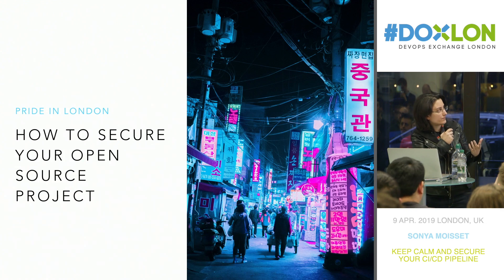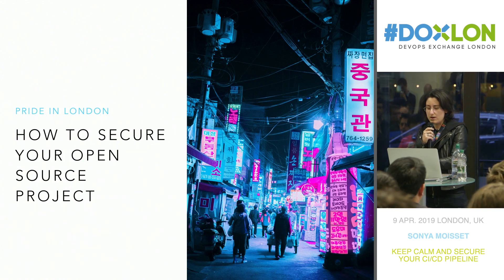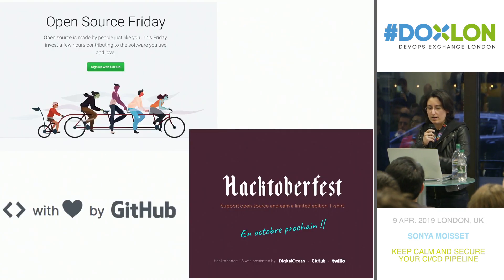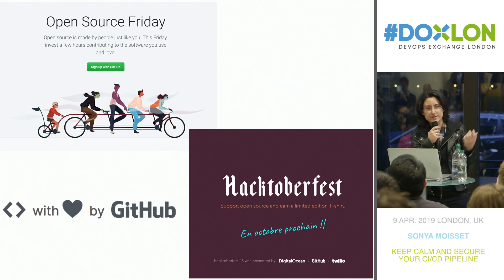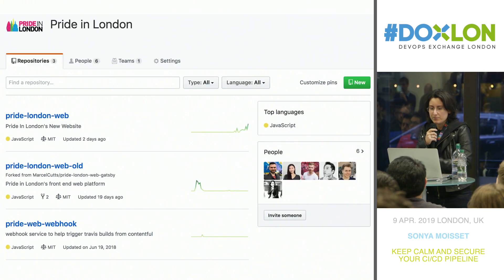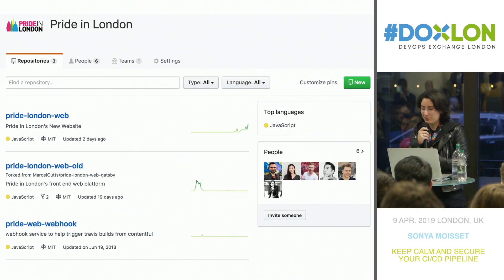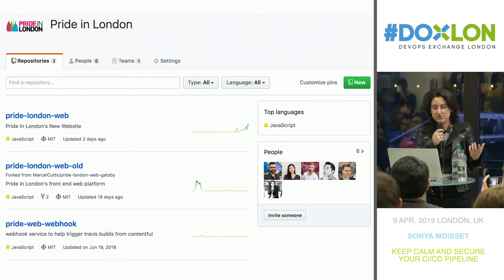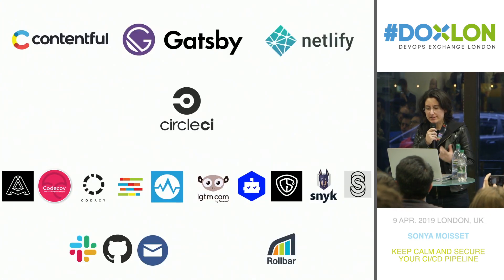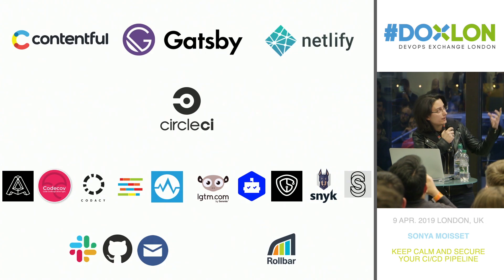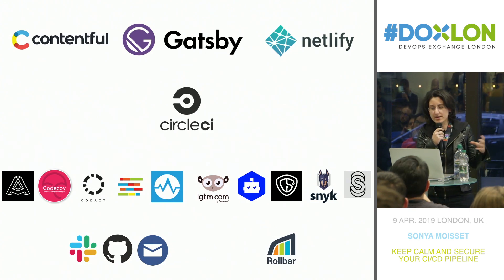Now I'm going to show you how, at Pride in London, we created a complete CI/CD pipeline for an open source project. Pride in London is an open source project — this will be the website this summer. The stack we're using: Gatsby as the main framework, fetching data from Contentful as the CMS, and hosting on Netlify.